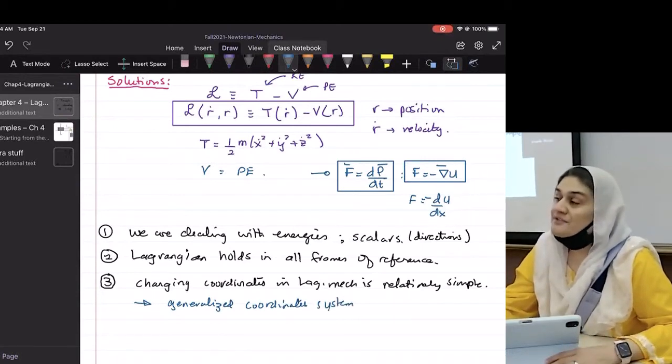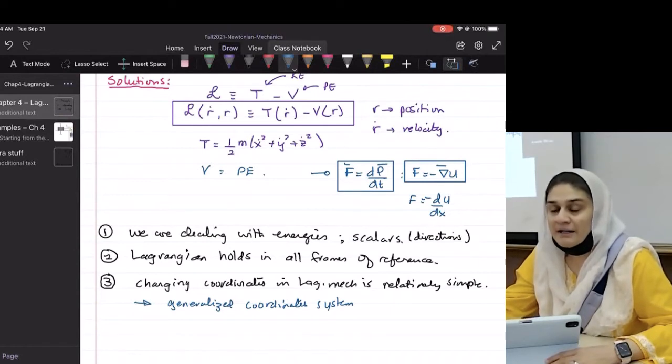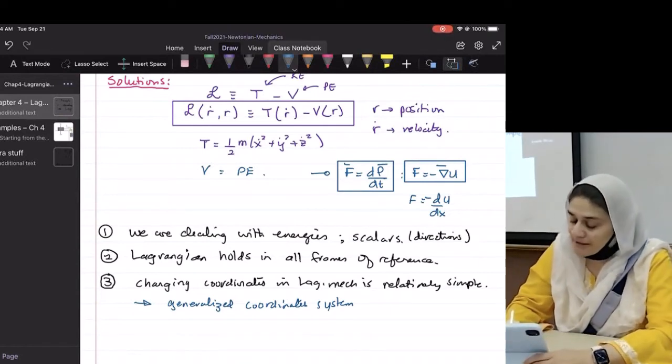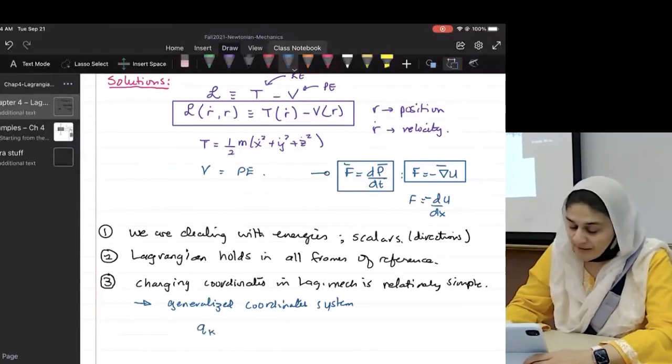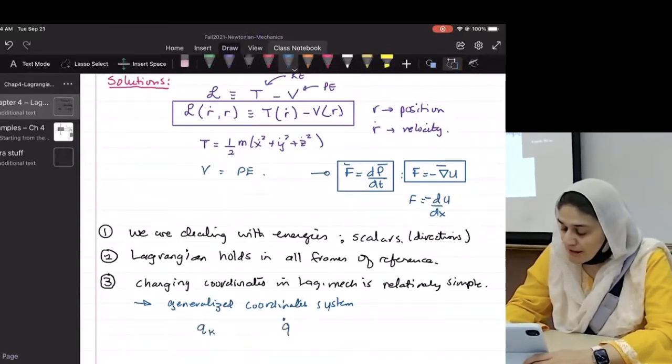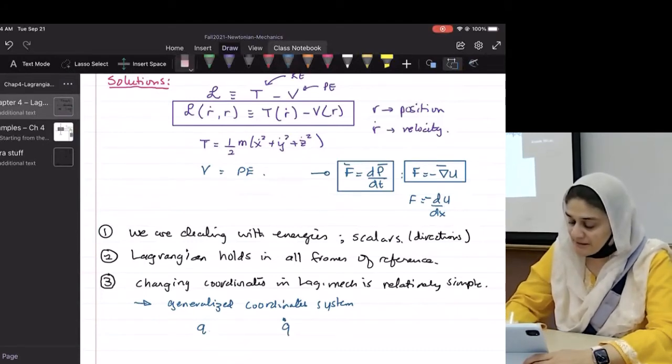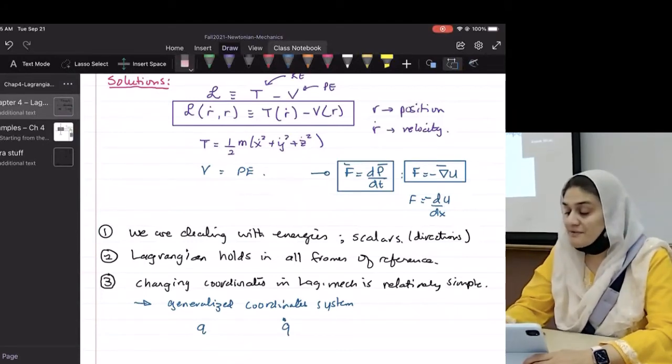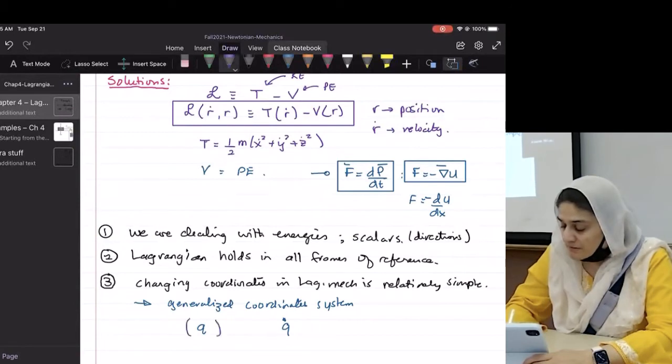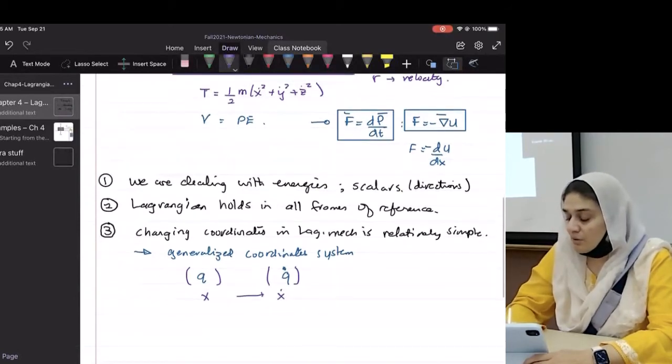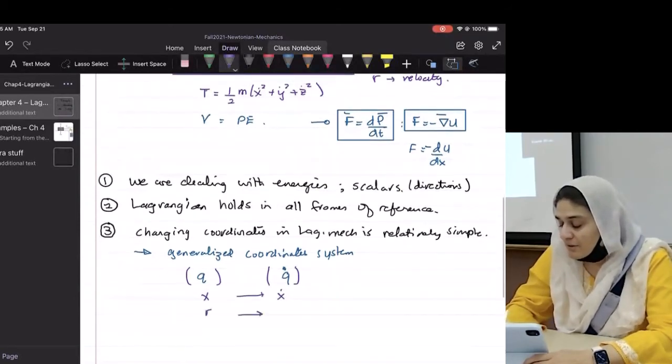So instead of saying XYZ or R theta phi, you instead call it Q to the subscript K and Q dot. Actually, let me just erase the K for now.